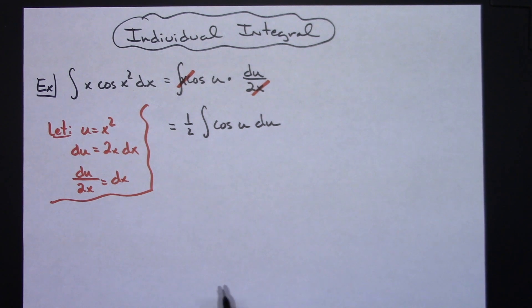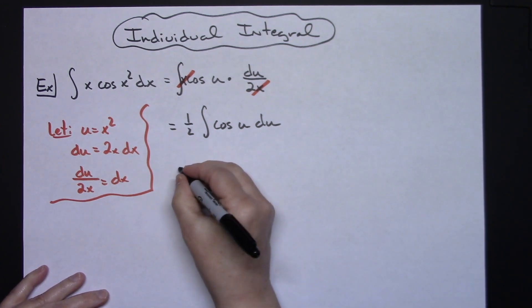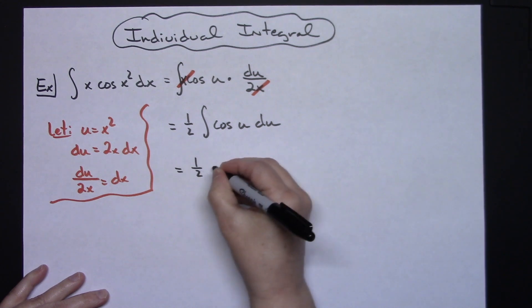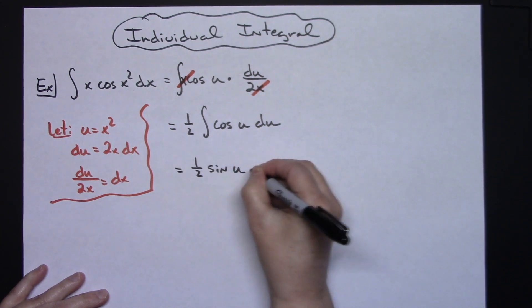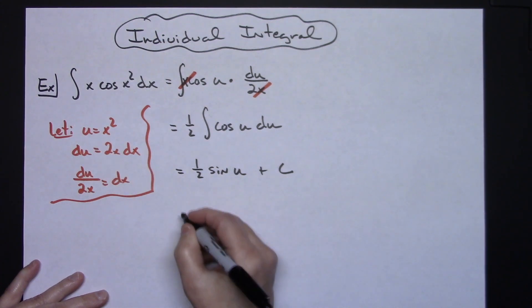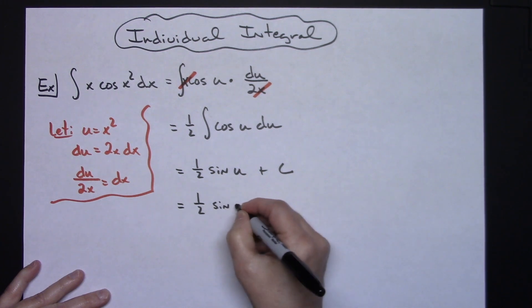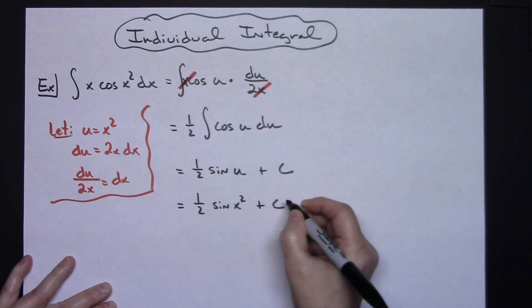That's a straightforward trig integral and hopefully if you're doing u-substitution you definitely have this memorized as being sine. So then we've got a 1 half sine u plus c and then all I got to do is replace u with what it equals for a final answer of 1 half sine x squared plus c.